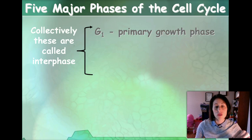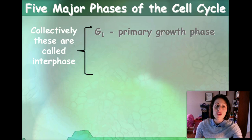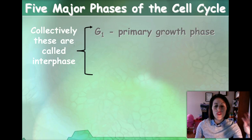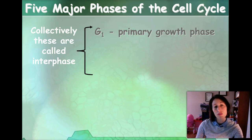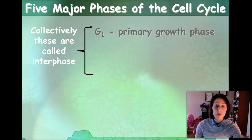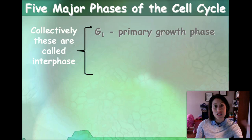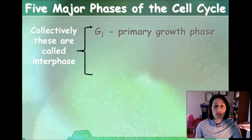The first one is G1. G stands for growth, and that's the primary growth phase — this is where all of the normal cell functions are happening. We've talked about cell respiration and photosynthesis if it's a plant cell, and we will soon talk about protein synthesis. That's when this happens — when things are moving in and out of the cell membrane. All of this is happening within the primary growth phase, G1.